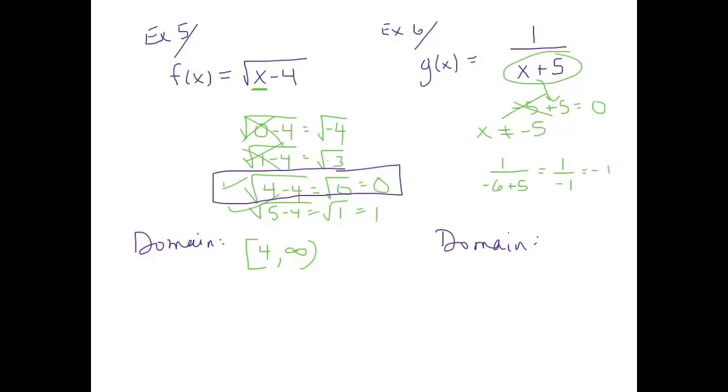So our domain is every single number except for negative five. So I'm going to write that as negative infinity to negative five, not including it, and all the numbers greater than negative five, so negative five to infinity. So whenever you're dealing with these very specific examples, you really need to think about what causes issues. If I plugged in something to x squared, great, I can square any number. That's not going to cause an issue.